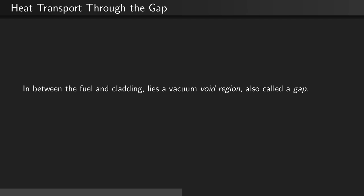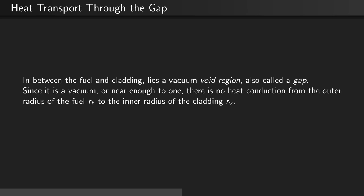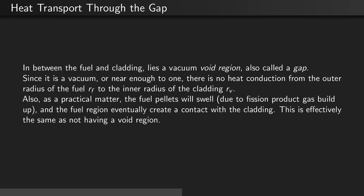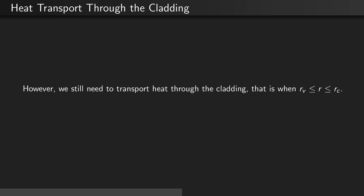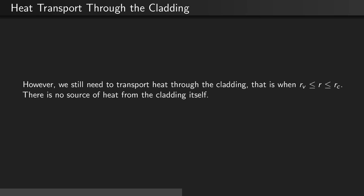Moving outwards, in between the fuel and cladding lies a vacuum void region, also called a gap. Since it is a vacuum or near enough to one, there is no heat conduction from the outer radius of the fuel r sub f to the inner radius of the cladding r sub v, or the void radius. As a practical reason, the fuel pellets will inevitably swell due to fission product gas buildup, and the fuel region will eventually contact the cladding, which is effectively the same as having no gap region. However, we will need to transport heat through the cladding — when the radius is greater than the void radius but less than the outer cladding radius r sub c — and note that since the cladding does not fission, there is no internal heat source.